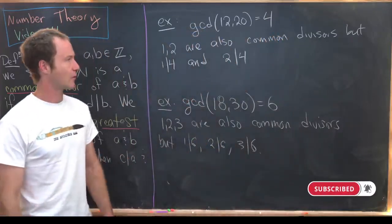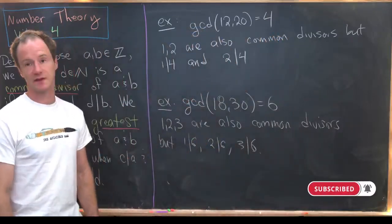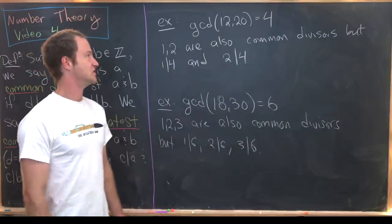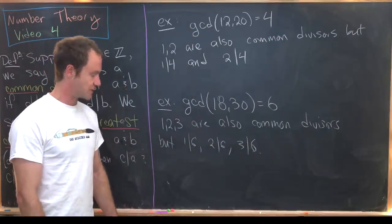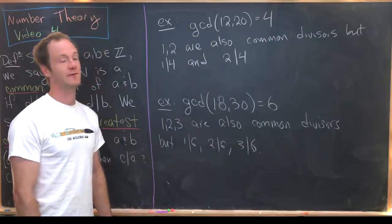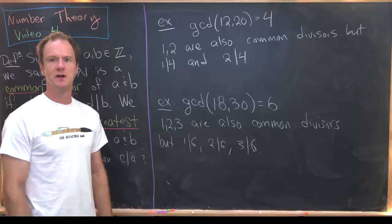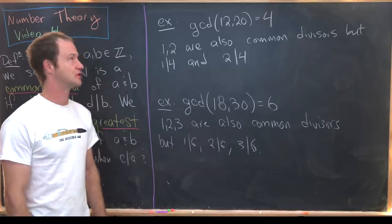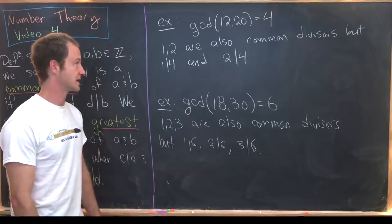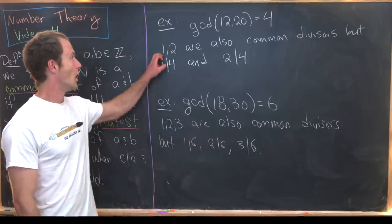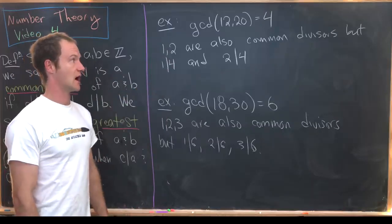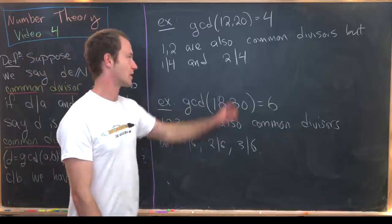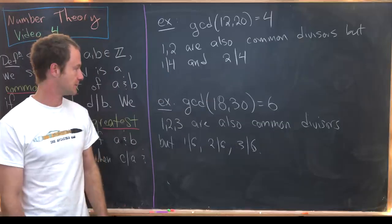So two quick examples before we start proving things. First off, the GCD of 12 and 20 is 4, and you can see that just by elementary school arithmetic. 1 and 2 are also common divisors, but 1 divides 4 and 2 divides 4.